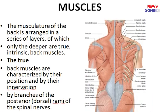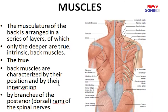The muscles that act on the vertebral column are known as the true or intrinsic muscles. These muscles share their origin and nerve supply, and are characterized by their position and innervation by the branches of the dorsal rami of the spinal nerve.